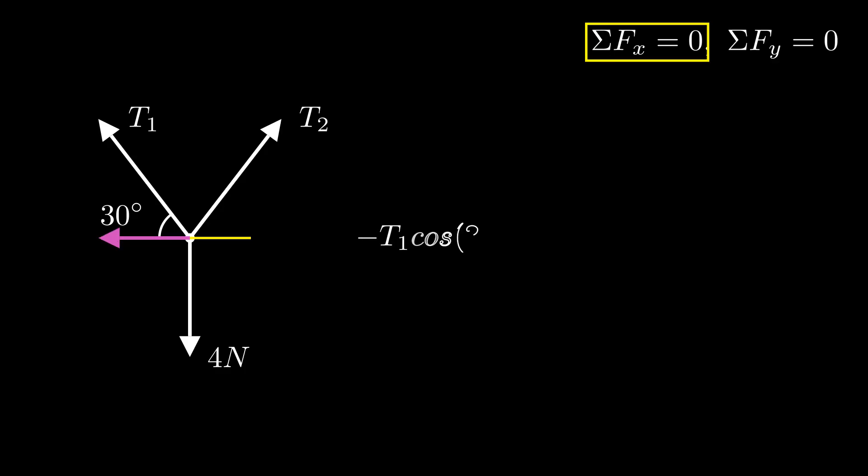For the first tension, we can get the x component of the force by multiplying the overall force T1 with the cosine of the angle that it makes with the ceiling, in this case, 30 degrees. We want to make sure that we include the minus sign here, since the component of the force is pointed in the negative direction.